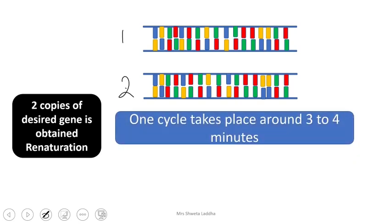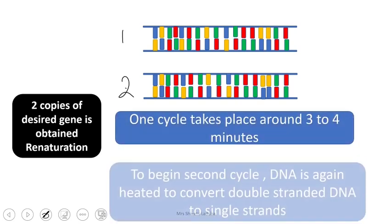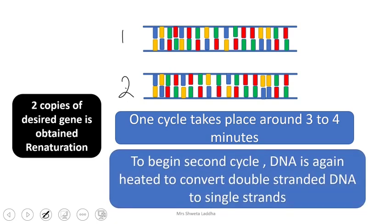One cycle takes around 3 to 4 minutes. To begin the second cycle, the temperature is increased again. DNA is heated again. These double strands are converted into single strands, and the process is continued similarly.